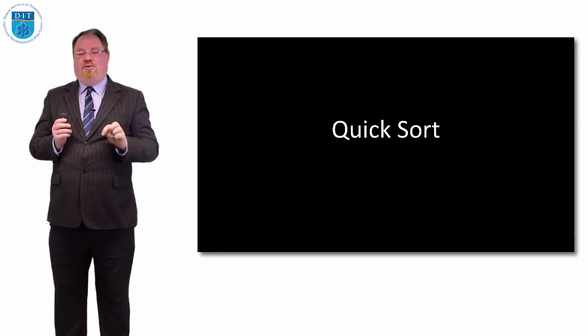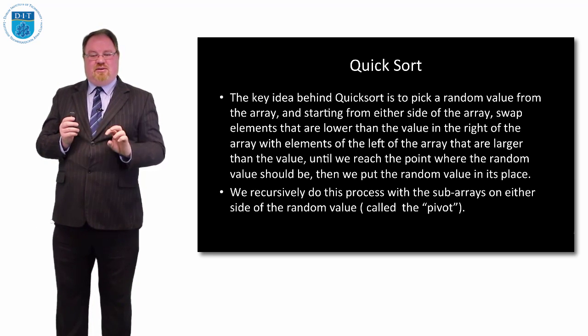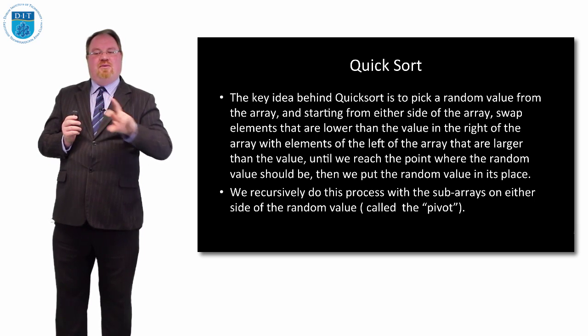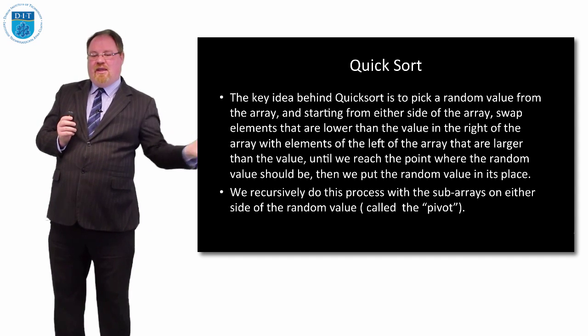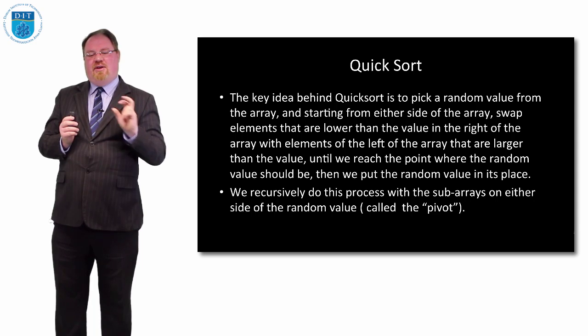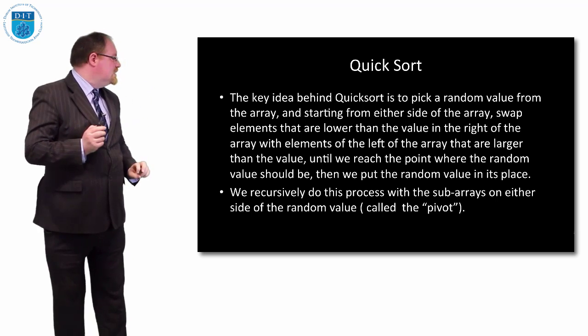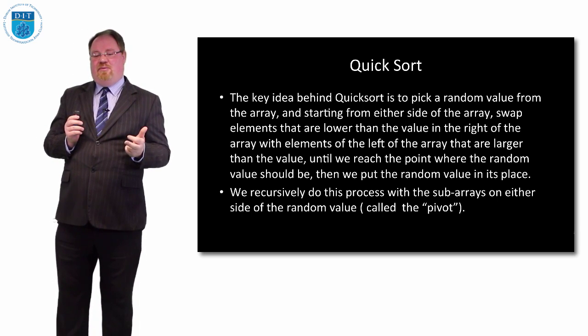Our last one is Tony Hoare's quick sort. We know we take a pivot value, we have a left pointer and a right pointer, and we look for the left pointer a value that's bigger than the pivot, and a right value smaller than the pivot, and we keep swapping them around.